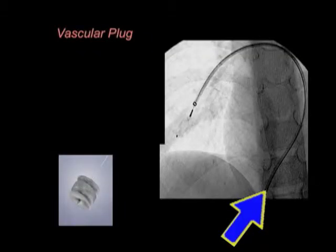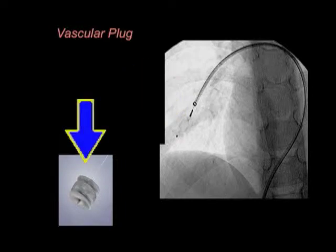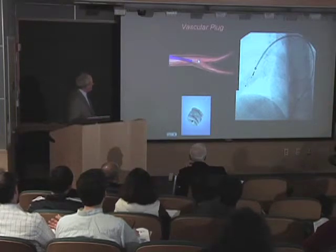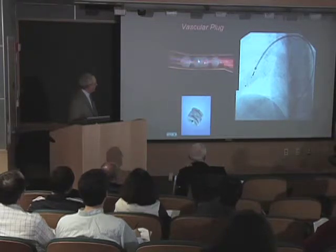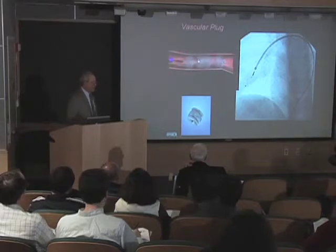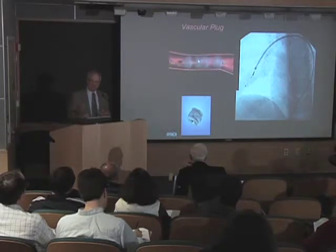We've placed the catheter all the way up there and we've deployed this device, which is called a vascular plug. We put a catheter in, then we put the device in, draw the cover back, and it opens up and blocks it. Very small diameter tools that go in and allow you to do all sorts of things.